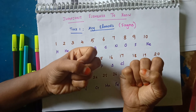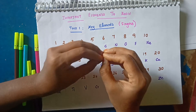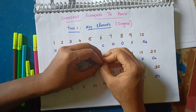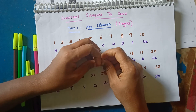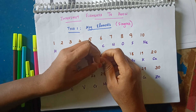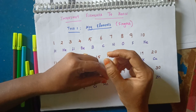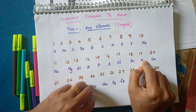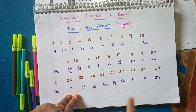If you want to use the 1 to 30 elements finger trick, write how you use it in the comment box. If you like this video, like, share, comment, and subscribe to the channel and click the bell icon. Thank you for watching.